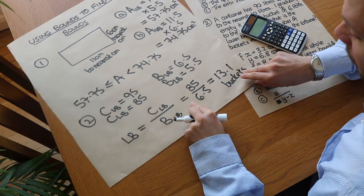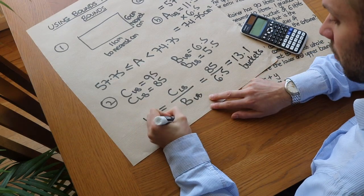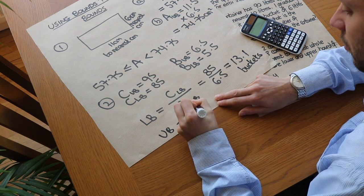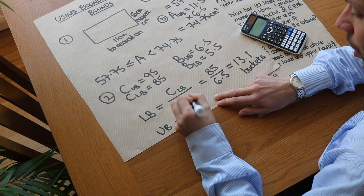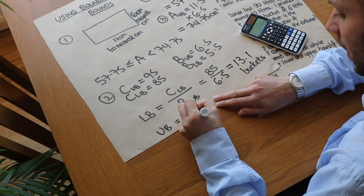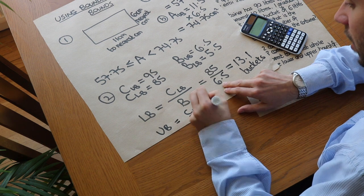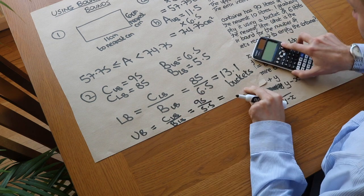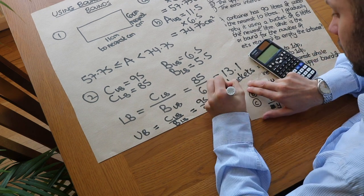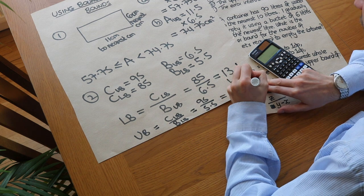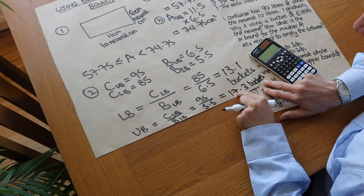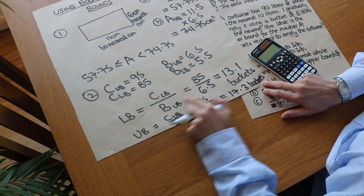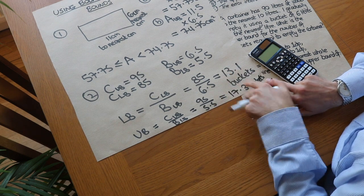For the upper bound for the number of buckets, we use the largest possible volume of the container divided by the lowest possible value for the bucket volume: 95 divided by 5.5, which gives 17.3 buckets to one decimal place. So 13.1 is the lower bound and 17.3 is the upper bound for the number of buckets needed.